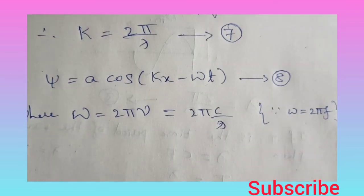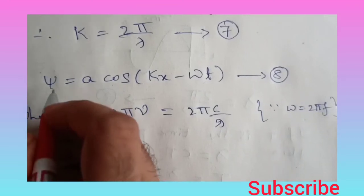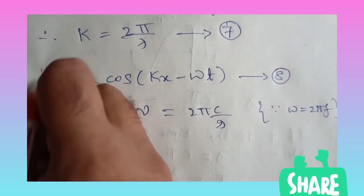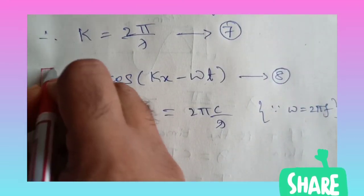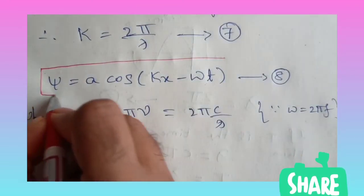Equation number eight is the main equation of traveling harmonic waves.